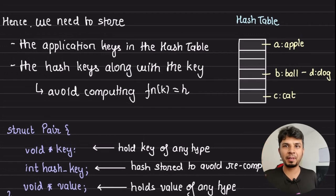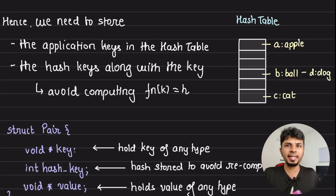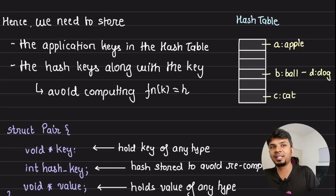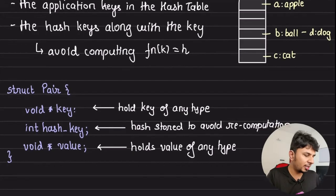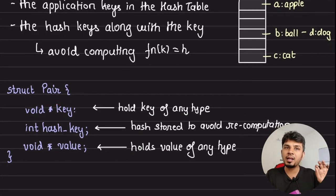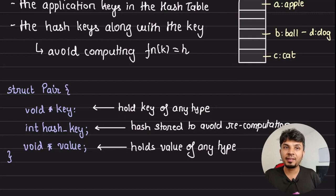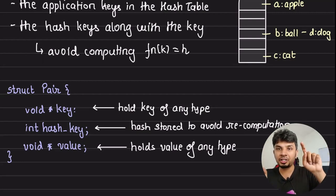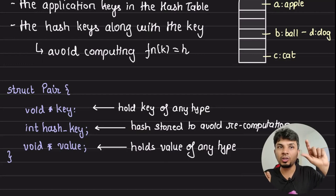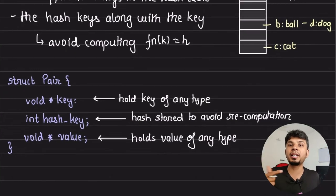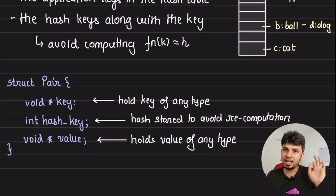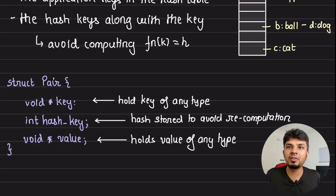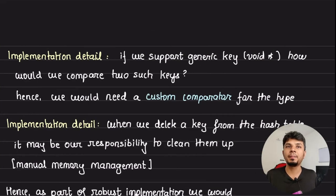Going into implementation detail — what do we need to store in the hash table? Previously we only stored keys, but now we also need to store the value. So we store something called a 'pair': a void* key so we can support any type of key; an integer hash key, which is the result of passing the key through the hash function (in the range of 0 to 2^32), stored so we don't have to recompute the hash every time; and a void* value to hold any type of value against the key.